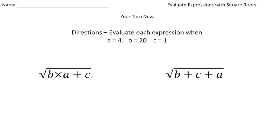All right welcome back. Let's see how you deal with these practice problems. So the first one we have the square root of b times a plus c. So let's first plug in the values. So we know b is 20. So 20 times a is 4.